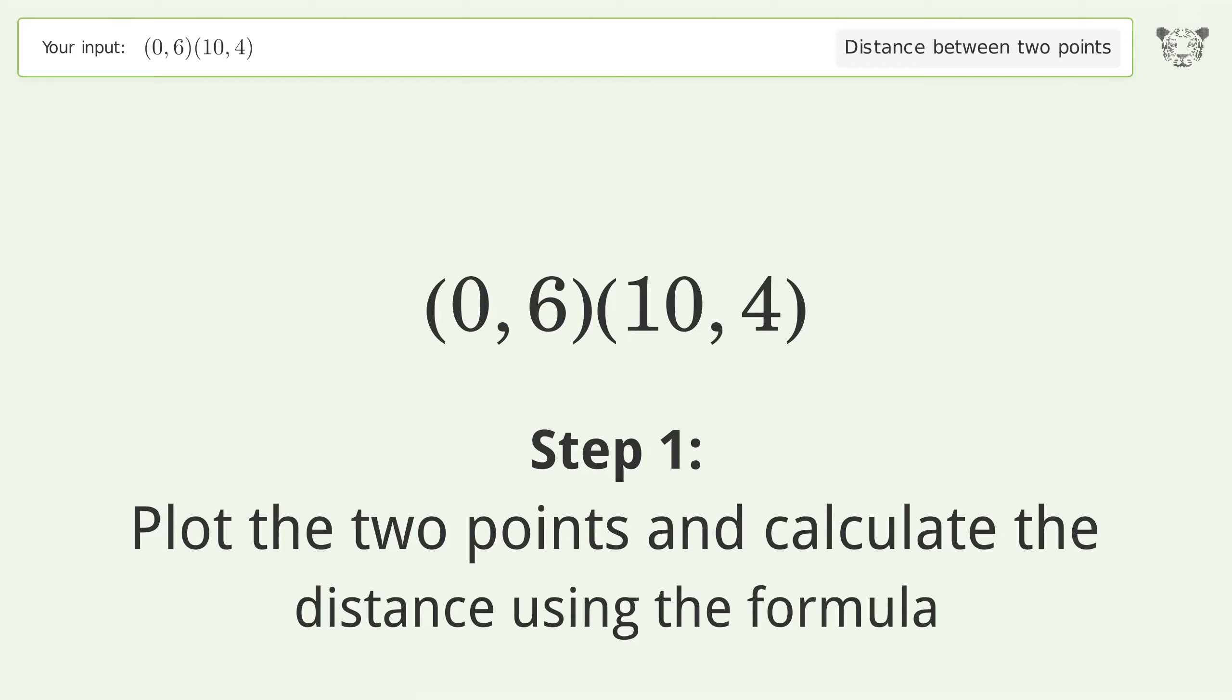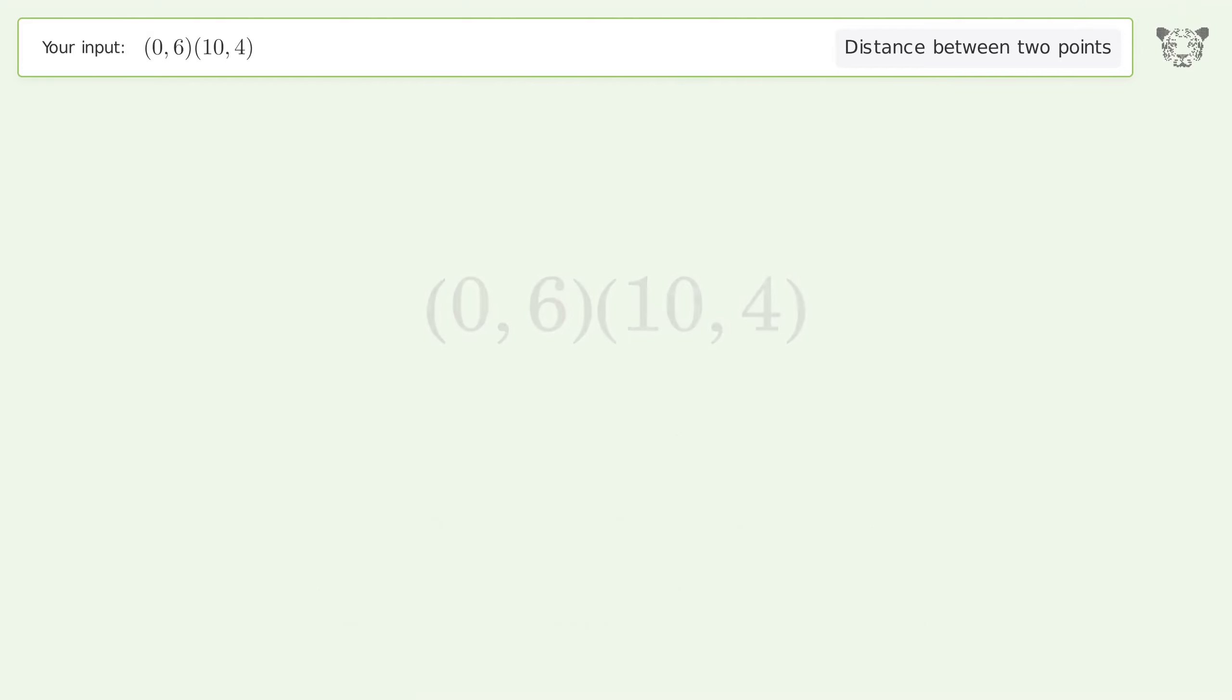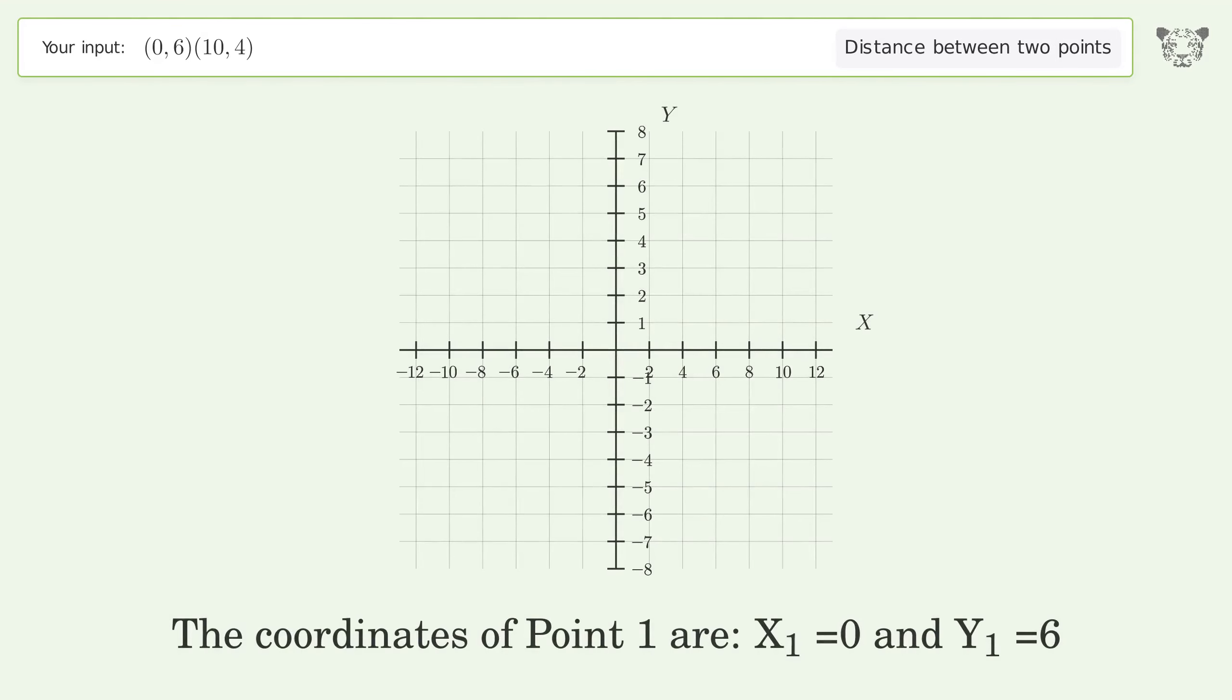Plot the two points and calculate the distance using the formula. The coordinates of point 1 are x₁ = 0 and y₁ = 6. The coordinates of point 2 are x₂ = 10 and y₂ = 4.